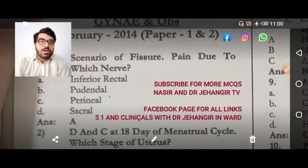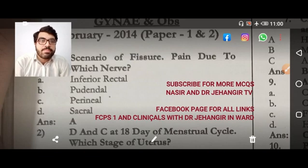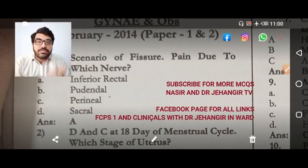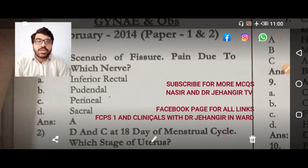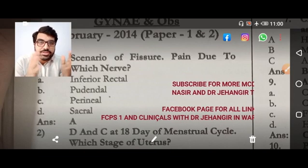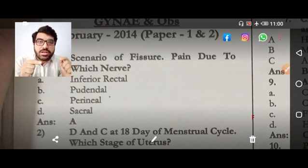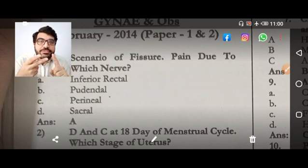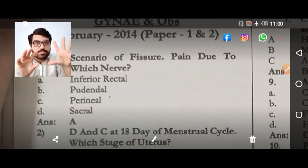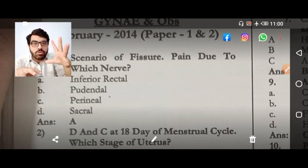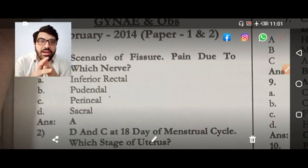Starting from the first MCQ: a patient scenario of fissure pain due to which nerve. There are certain MCQs on anal fissure. The answer is the inferior rectal nerve, but in some scenarios they have not mentioned the inferior rectal nerve — they have mentioned the pudendal nerve. So you have to pick the inferior rectal branch of the pudendal nerve. In MCQ, if they give you a part that is superior compared to the group, you choose the part — there the inferior rectal nerve is the right answer.